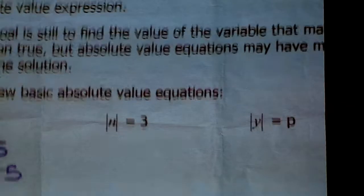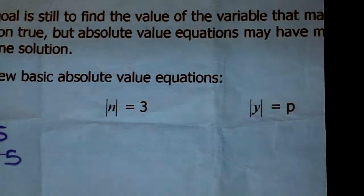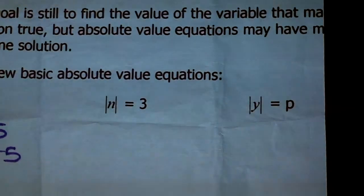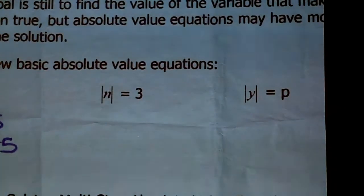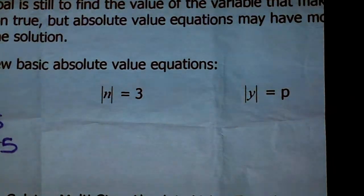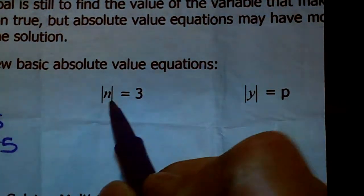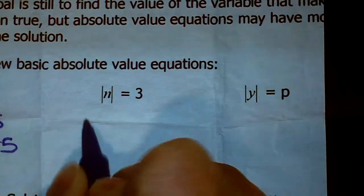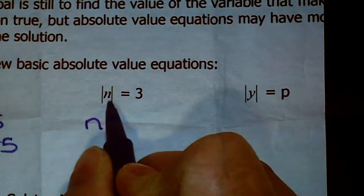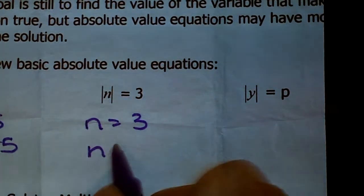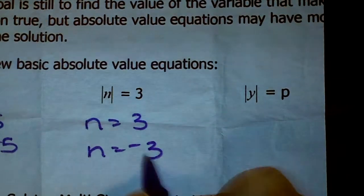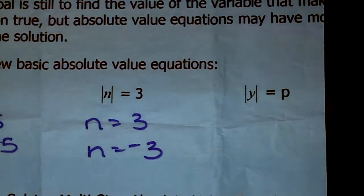Try the next one yourself — you can hit pause anytime. I have the absolute value of N equals 3. The absolute value of 3 is 3, and the absolute value of negative 3 is also 3. So again, two answers.